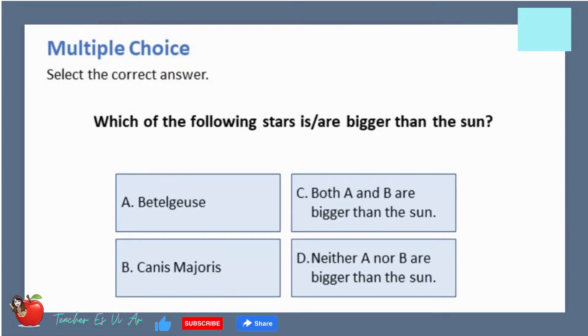Multiple choice. Select the correct answer. Which of the following stars is slash are bigger than the sun? A. Beetlejuice. B. Canis majoris. C. Both A and B are bigger than the sun. D. Neither A nor B are bigger than the sun.